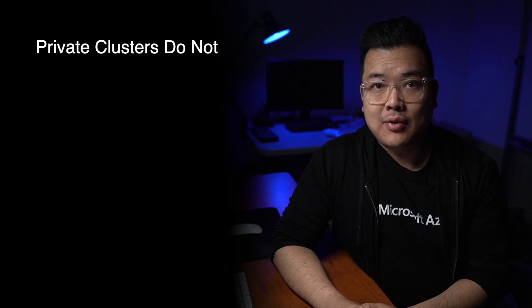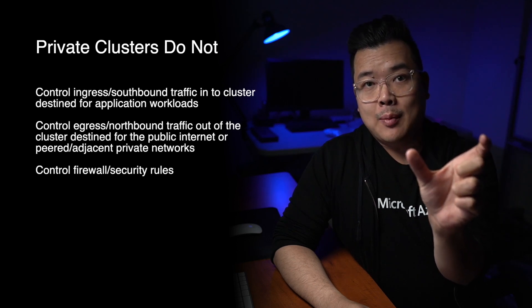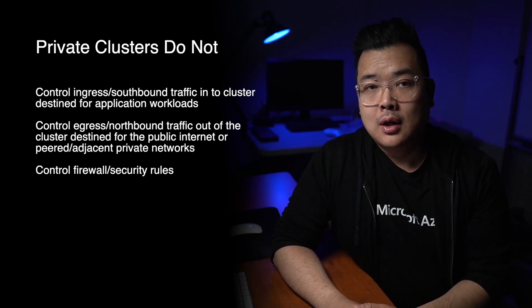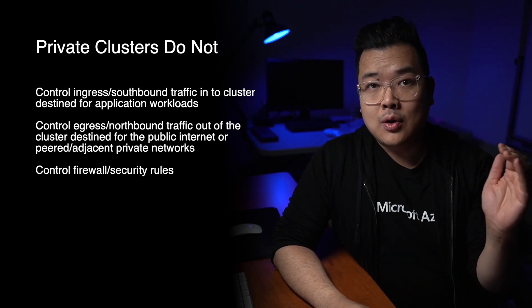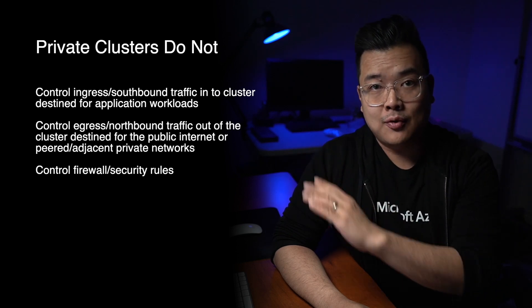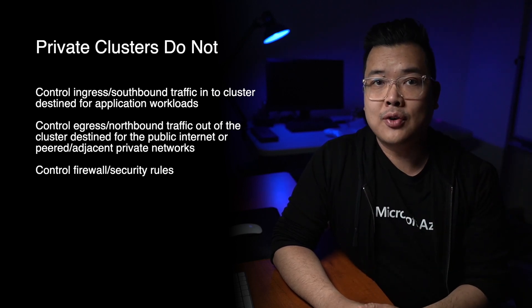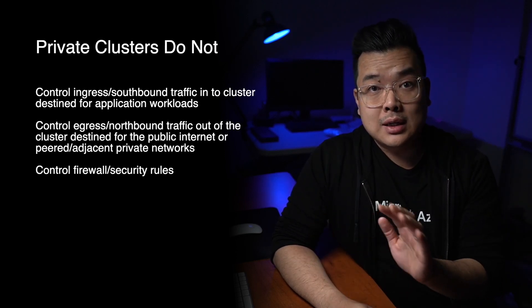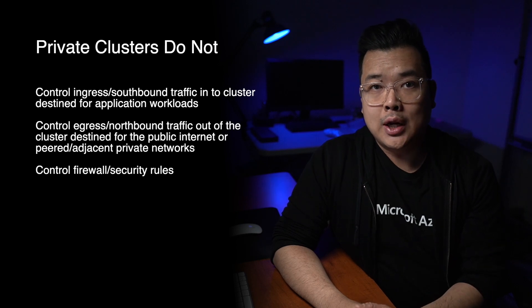The last thing to take into consideration is what AKS private clusters is not. It is only moving your Kubernetes API endpoint off of the public internet and behind your virtual network, making it only reachable within your VNet via private link. It does not block communication to your cluster — things around ingress rules and egress rules for outbound traffic from your cluster, as well as setting up firewalls if you need packet inspection, or having a WAF set up in front of the cluster — that's completely separate. That's for your application workload. So it doesn't help to solve that; it's only one piece of the overall security model you need to look at when deploying a Kubernetes cluster.